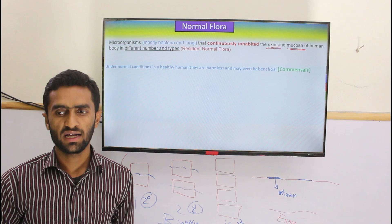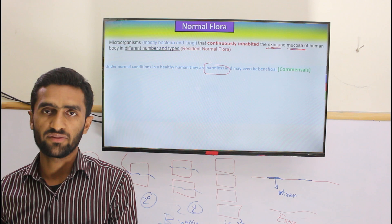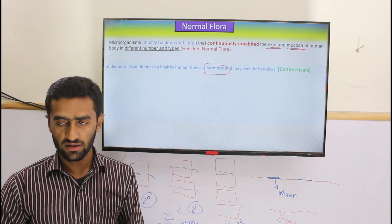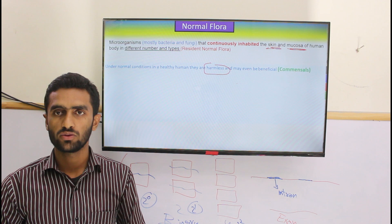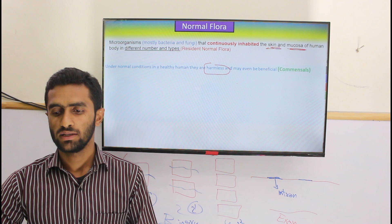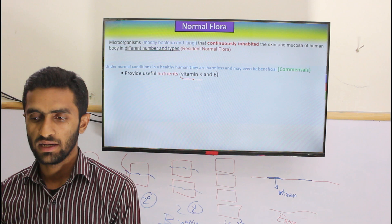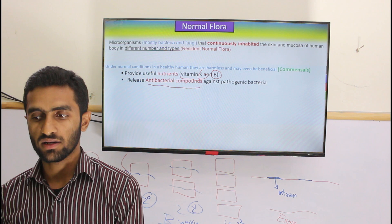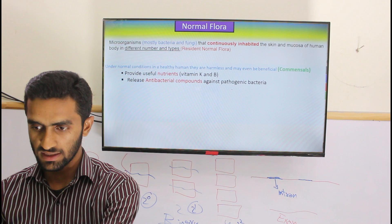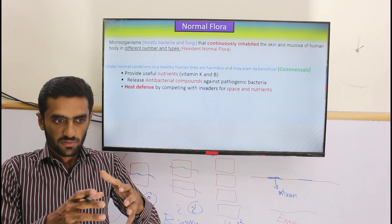Under normal conditions in a healthy human, resident normal flora are harmless and can even be beneficial. For example, bacteria in the colon produce vitamin K, which is important for coagulation mechanisms. If someone is deficient in normal flora, vitamin K levels will drop. They also provide nutrients, and antibacterial compounds such as antibiotics are derived from microorganisms.